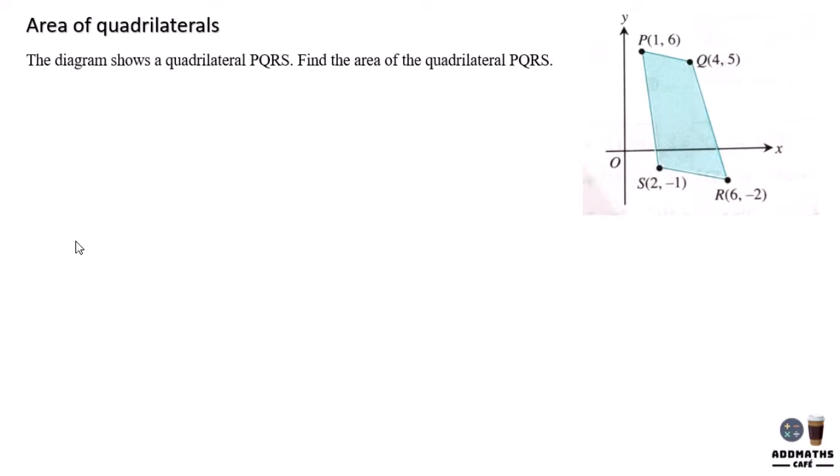To find the area of a quadrilateral, simply apply the area of triangle formula. Use 1 over 2 and go clockwise, choosing any coordinate to start first.